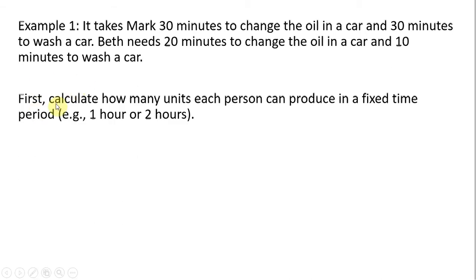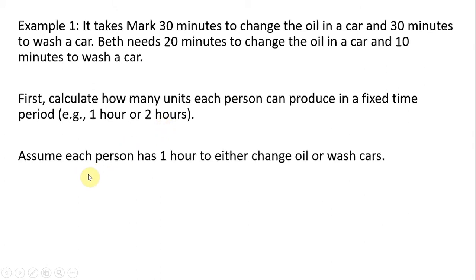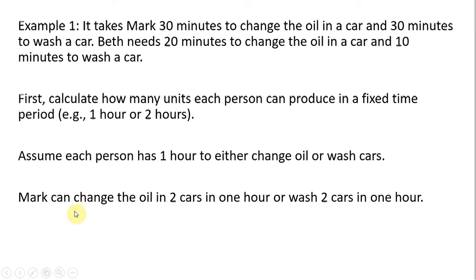In these types of problems, the first thing I like to do is calculate how many physical units can be produced in a fixed time period, say an hour. I'm going to assume each person has one hour to either change oil or wash cars. In one hour, Mark can change the oil in two cars or wash two cars. It takes Mark 30 minutes to change the oil in one car, so in an hour he could change the oil in two cars — and the same for washing cars.